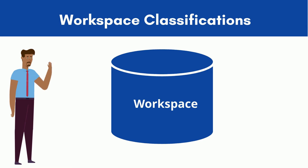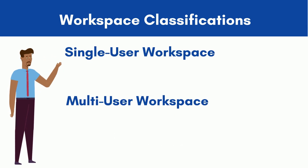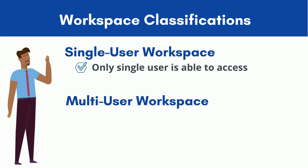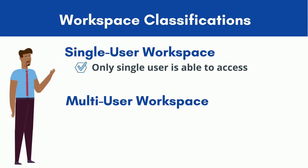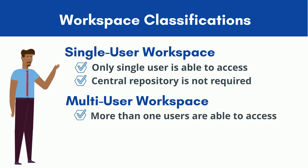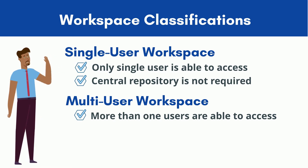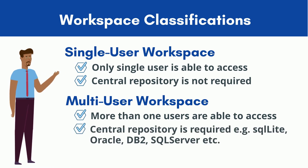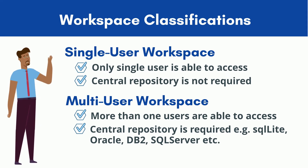Let's discuss the classifications of Tosca workspaces. Two types are available: single-user and multi-user workspace. In a single-user workspace, only one user is able to connect and work with Tosca, so a central repository is not required. In a multi-user workspace, more than one user can access the workspace, so the Tosca workspace has to be created in central repositories. Tosca allows creating the workspace in different databases such as Oracle, SQLite, DB2, and SQL Server.